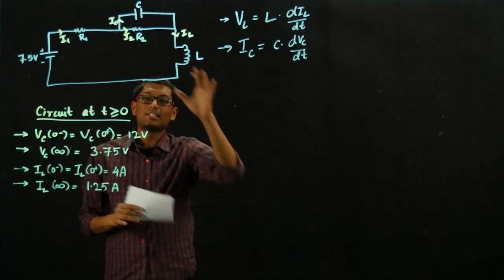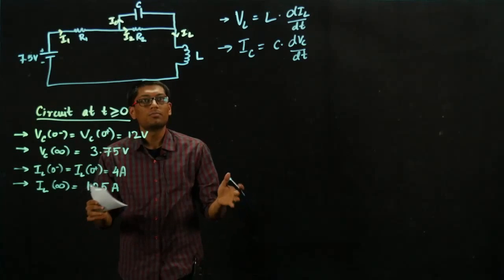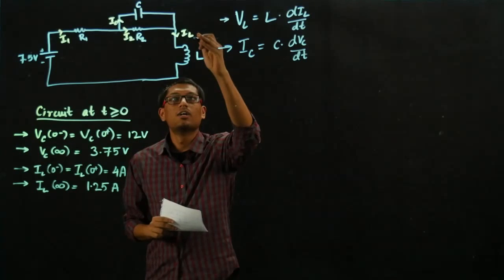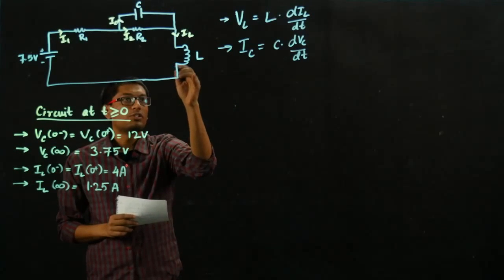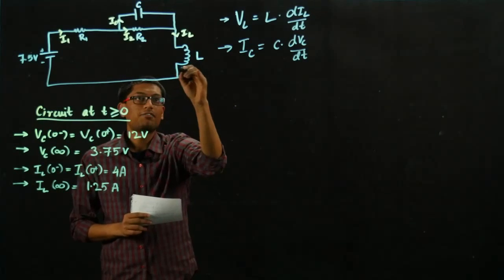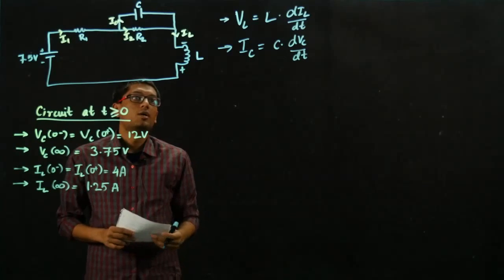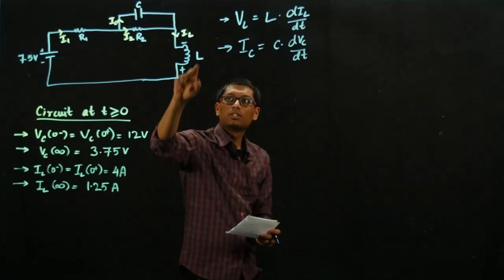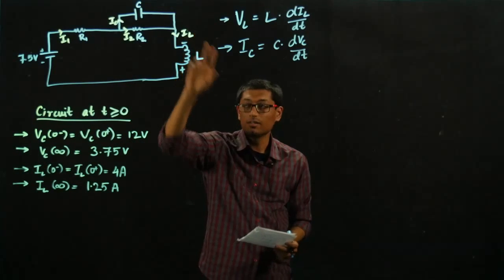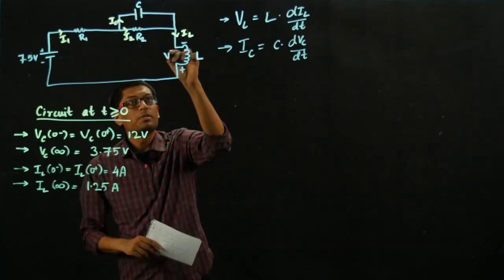Now let's assume for this problem that IL is decreasing. That would mean that the voltage difference across the inductor would have a polarity of positive on this node and negative here. Because it would try to oppose the decreasing value of IL. That gives me my VL.